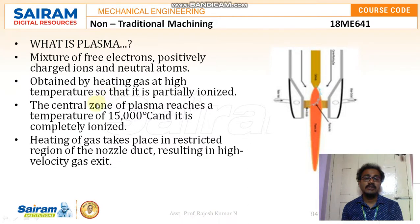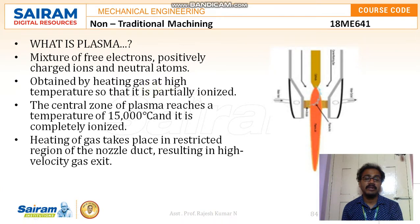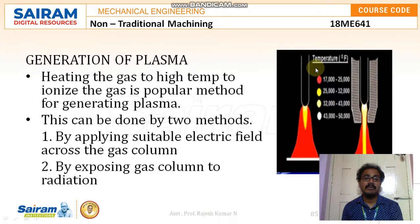The central zone of plasma reaches a temperature of 15,000 degree Celsius and is completely ionized. Heating of gases takes place in a restricted region of the nozzle duct, resulting in high velocity gas exit. You can see this chamber where the mixture of all these things is taking place and where current is supplied.